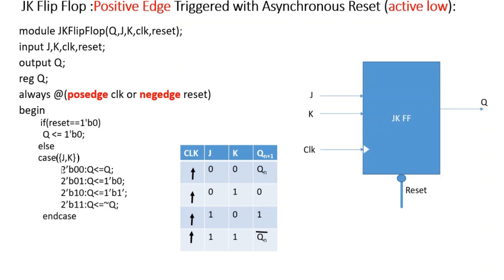Using this case structure we are realizing the truth table. In the case structure we are using the concatenation operator. It will concatenate the two bits J and K — each is one bit, so when concatenated we get a two-bit number. In the first row, when J is 0 and K is 0, there should be no change, and we are realizing it using the assignment Q <= Q.